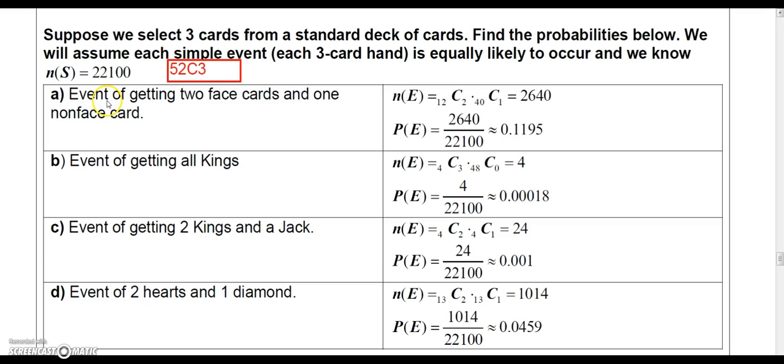Now, the event of getting two face cards and one non-face card. Well, let's find out the number of ways this could happen. Now, there are 12 face cards in a deck. So out of the 12 face cards, you would want to choose two. And then you would have to choose out of the other 40 cards, the ones that are not face cards, you'd have to choose one. So you would multiply these two combinations together and get 2,640.